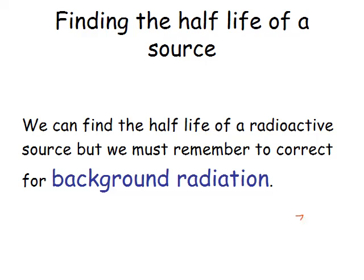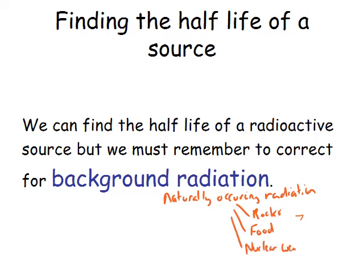Background radiation is naturally occurring radiation, which could be things like rocks or food, or man-made things like nuclear weapons fallout, or natural things like cosmic rays. So we need to correct our count for the background radiation.